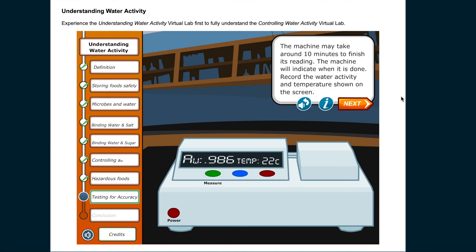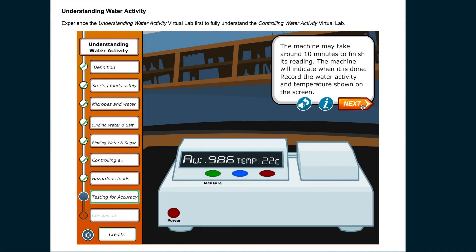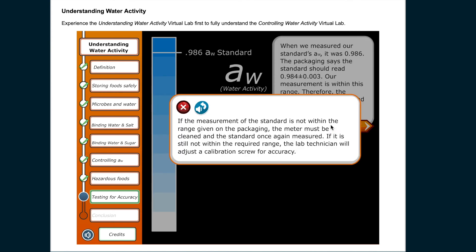The machine may take around 10 minutes to finish. Record the water activity and temperature shown on the screen, following the lab's protocol for recording all calibrations. When we measured our standard's water activity, it read 0.986 — the packaging says it should read 0.984 ± 0.003, so our measurement is within range and the instrument is accurate. If the measurement is not within range, the meter must be cleaned and re-measured; if still out of range, a lab technician will adjust the calibration screw.